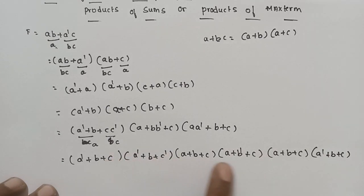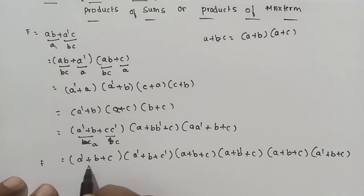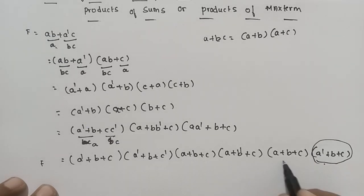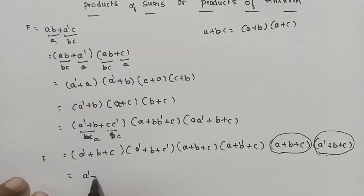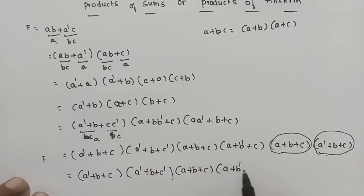Now we have the Products of Sum form where every maxterm contains every variable. The function has 3 variables. We will eliminate repeating terms: a-prime bc and a-prime bc are eliminated. Also, a-dash plus b plus c-dash is not repeated here, and a plus b plus c is not repeated here. This gives the remaining final Products of Sum form.